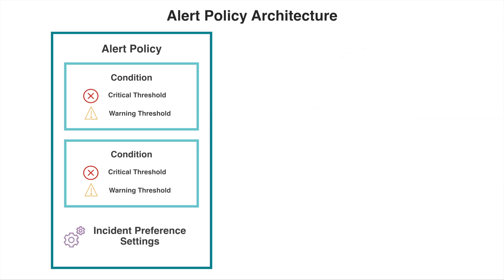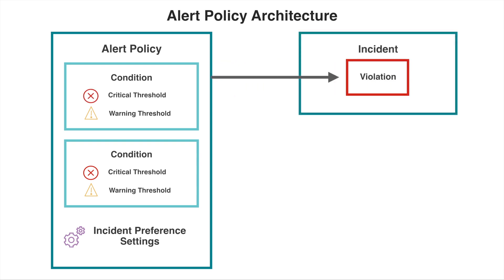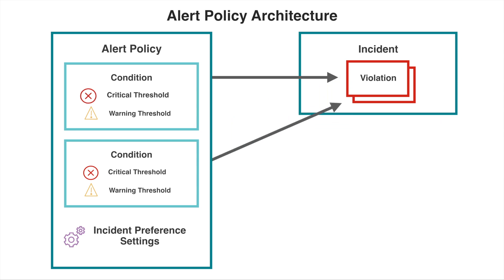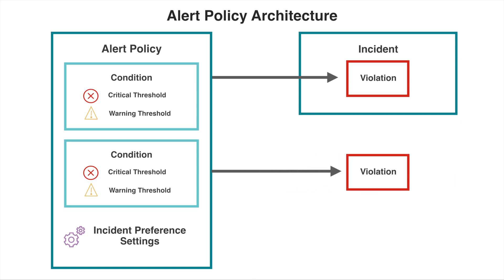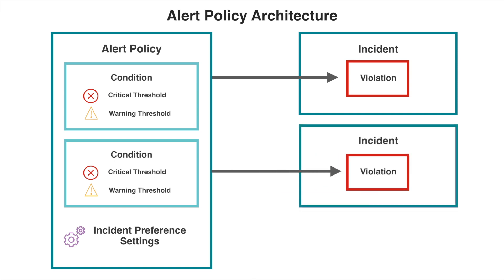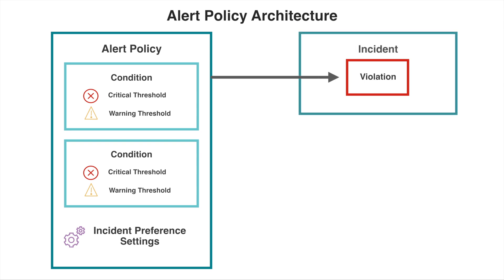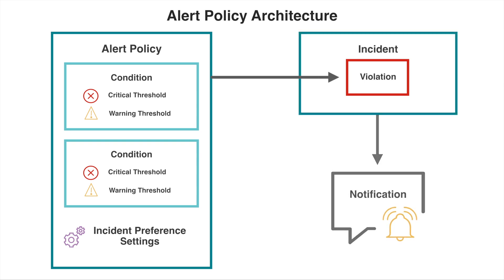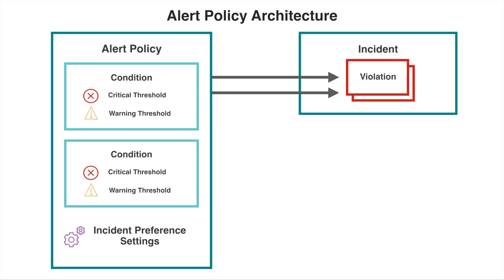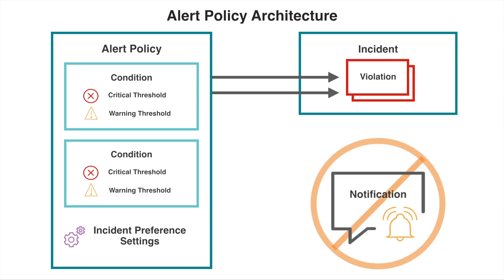Each policy includes incident preference settings, which determine when incidents are opened. Depending on your incident preference settings, new critical threshold violations may be rolled up into an existing incident, or a violation may result in a new incident being opened. I'll discuss the details of incident preference settings in a later tutorial. Whenever a new incident is opened, a notification is sent, but when a violation is rolled up into an existing incident, a notification is not sent.